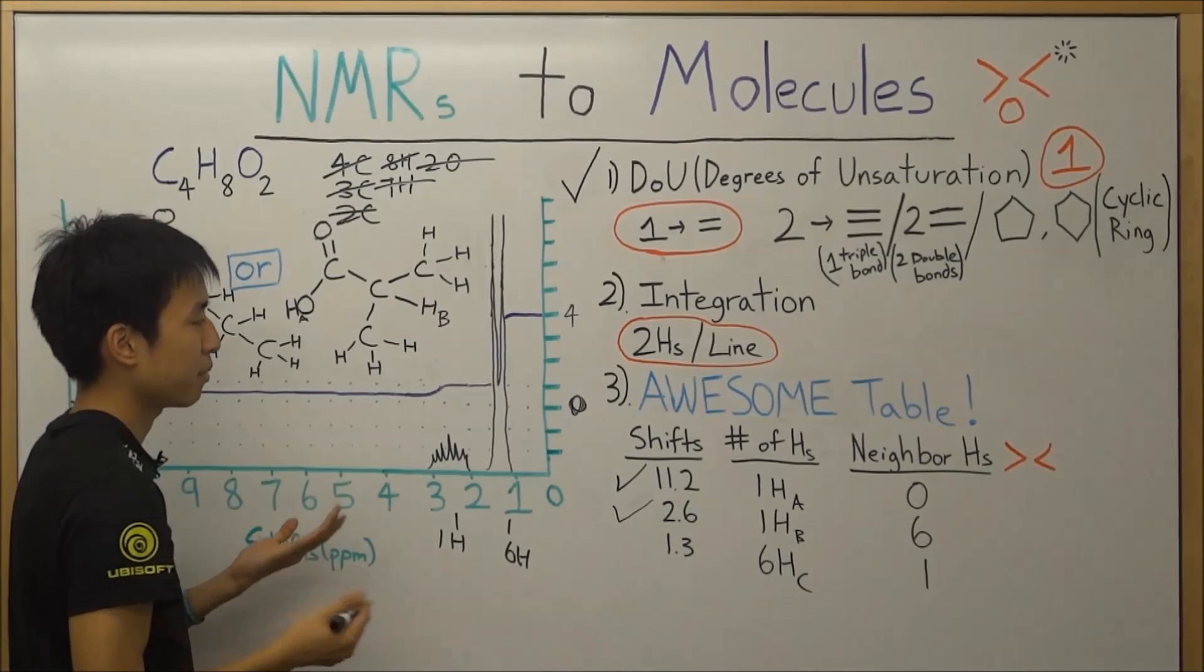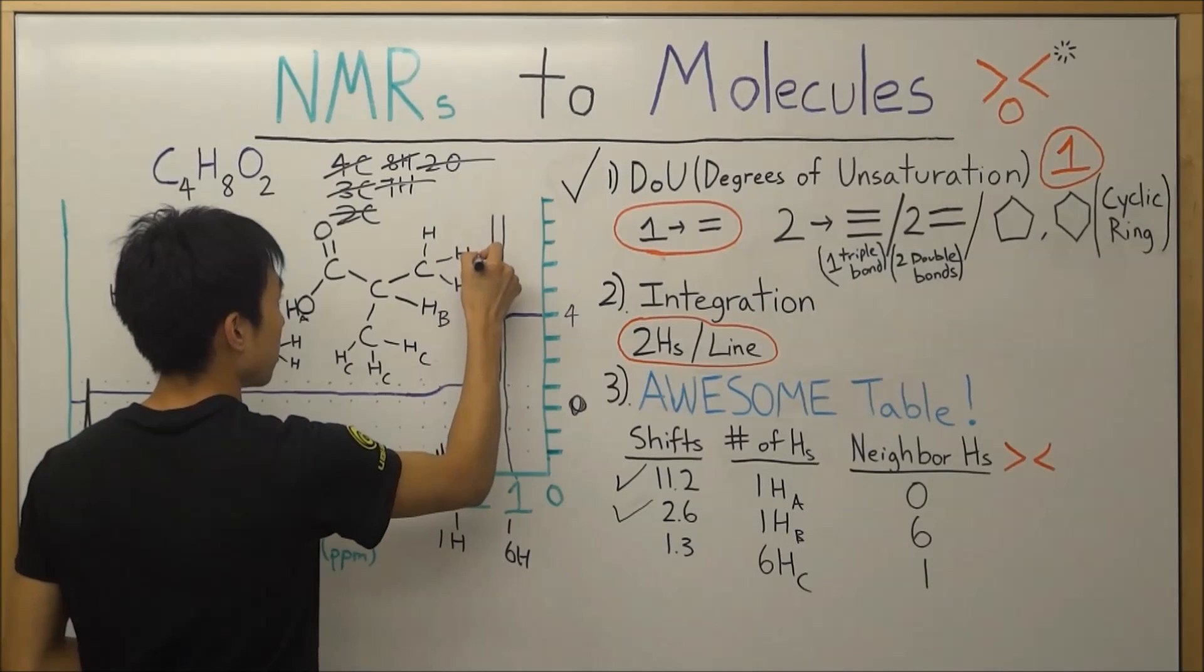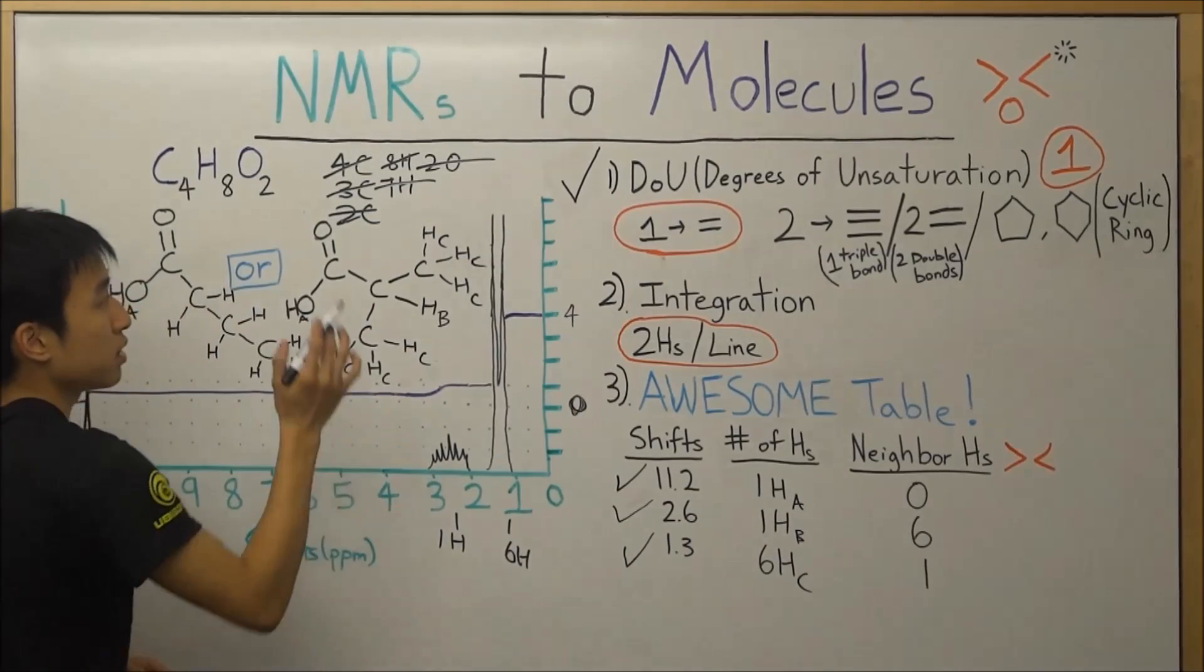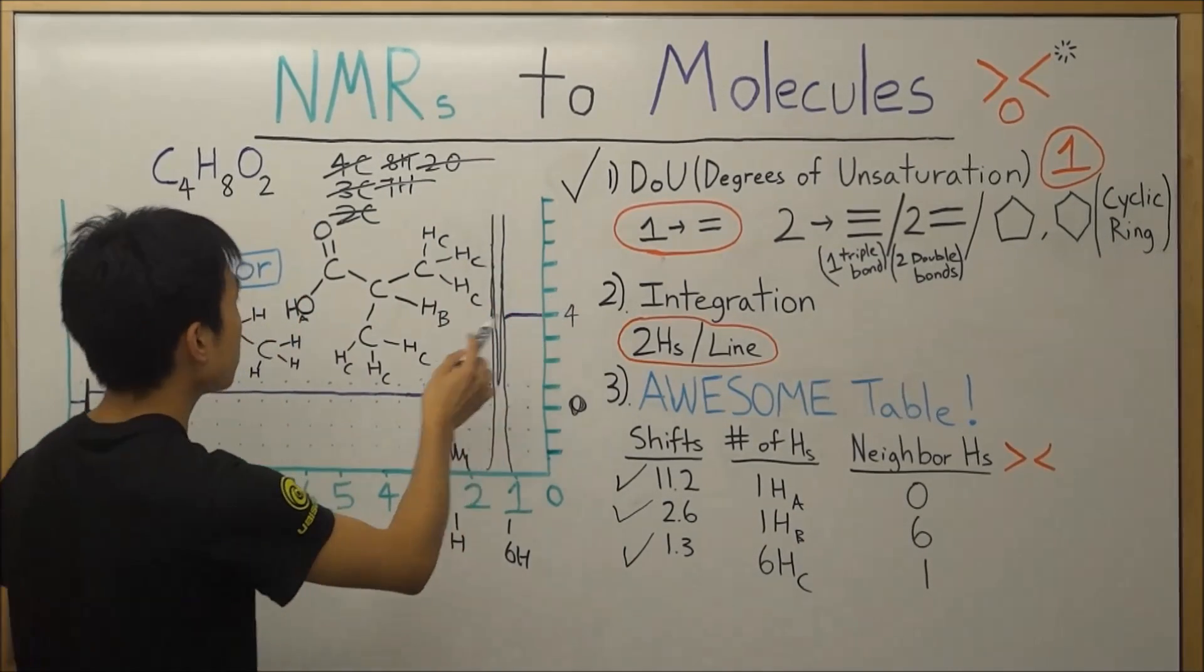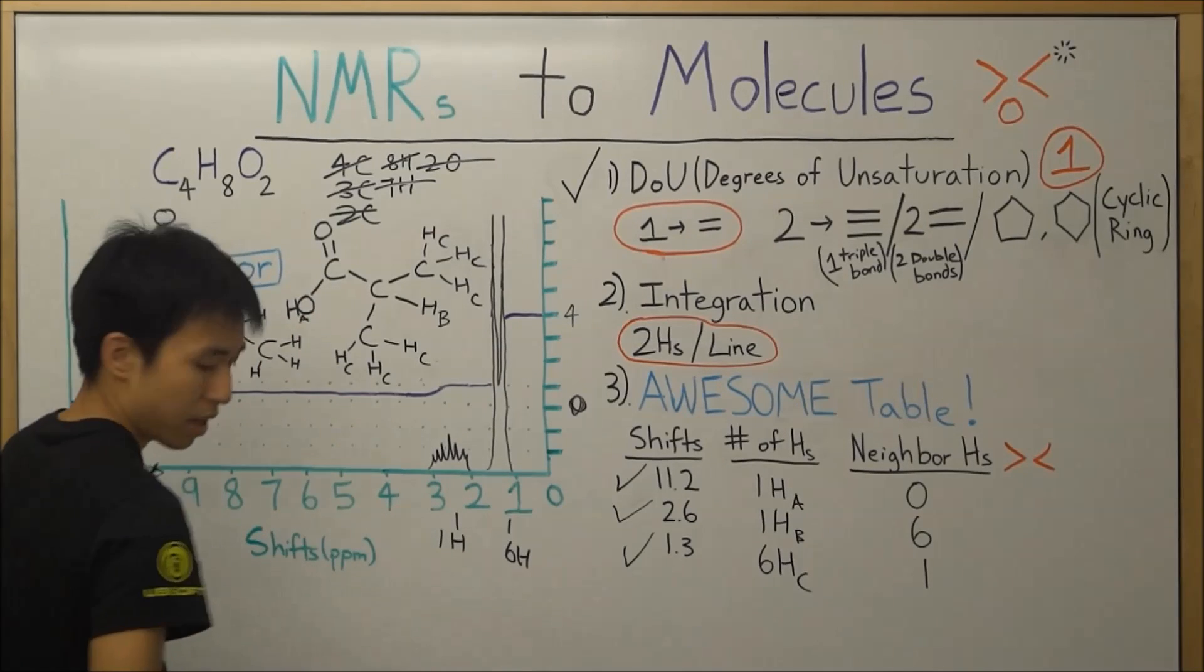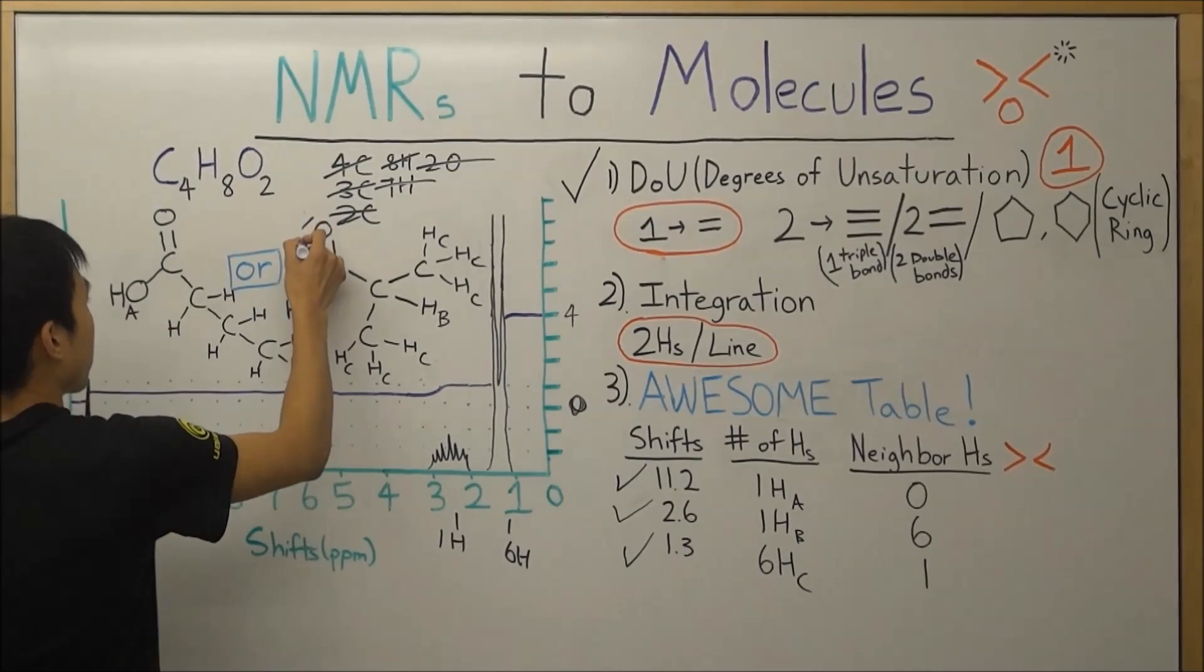So yeah, from the looks of things, these guys over here are HC, HC, HC, HC. And we're done over there. We fulfilled the degrees of unsaturation with the double bond in our carbonyl right here. So it's perfect. And yeah, from the looks of things, this is actually going to be our final product right here.